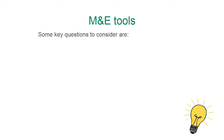Let's start with some key questions to consider when in the second stage of the monitoring and evaluation cycle: the capture of data. First, it is crucial to know in advance what you aim to measure. The elements that help us answer this question are called indicators. According to the Organisation for Economic Cooperation and Development, an indicator is a quantitative or qualitative factor or variable that provides a simple and reliable means to measure achievement, reflect changes connected to an intervention, or help assess the performance of a development actor.